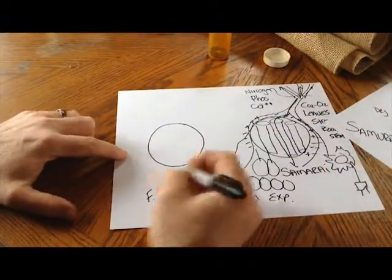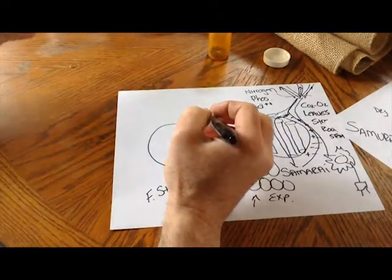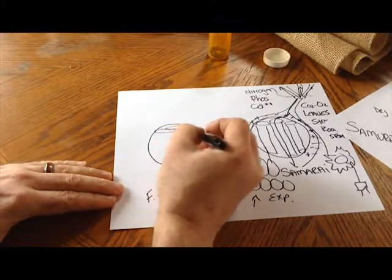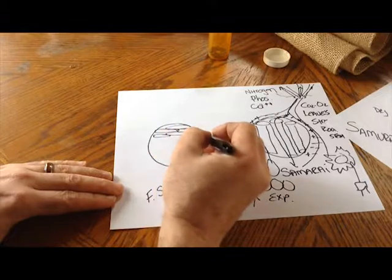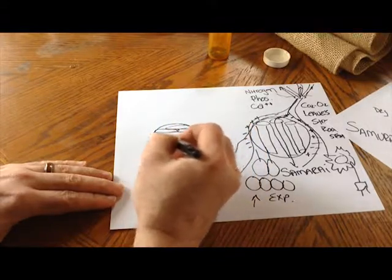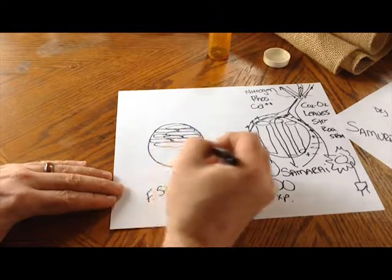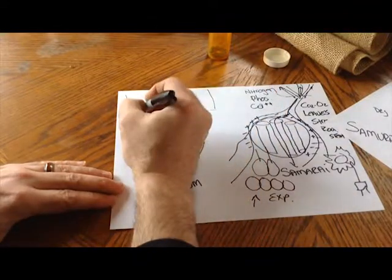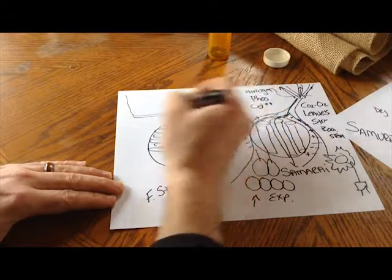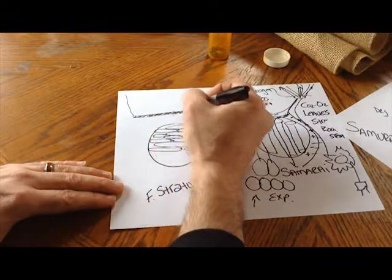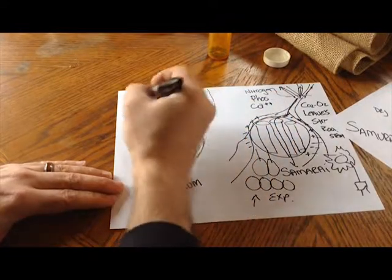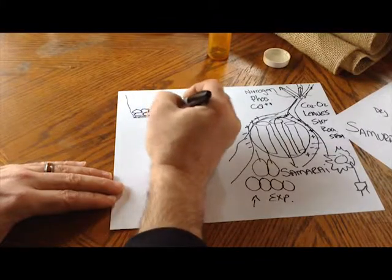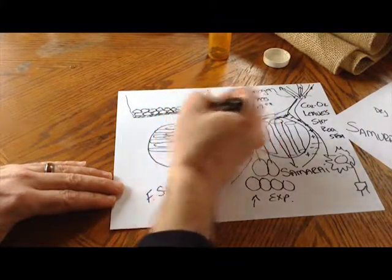I don't know for sure but I think the Fluval Stratum, because it's so soft, I think its structure may be plate-like. That's the reason why you see in the bottom of the tank this loam build up. This is all that soft black broken down Fluval Stratum and sitting on top of this you've got the Fluval Stratum sitting on top of this.